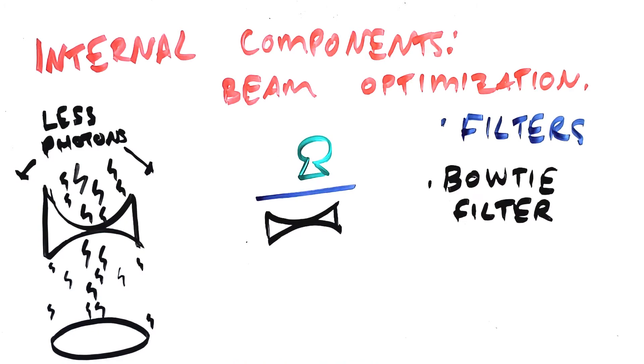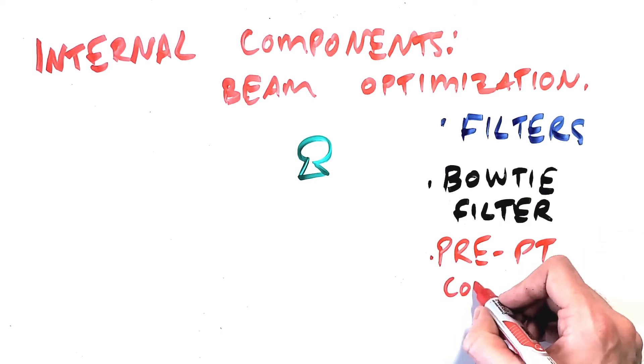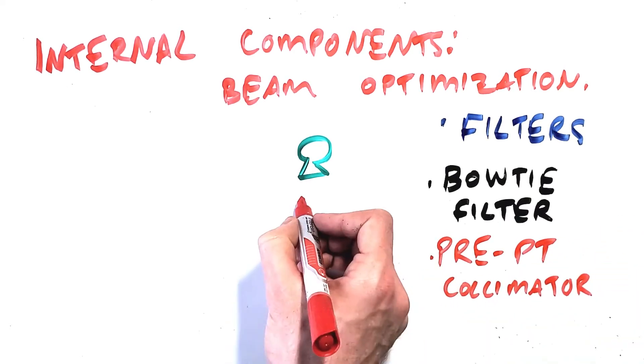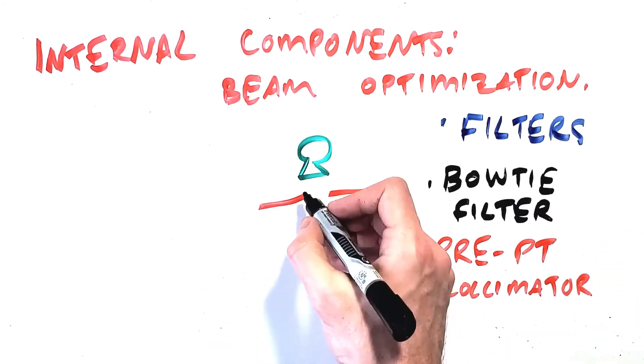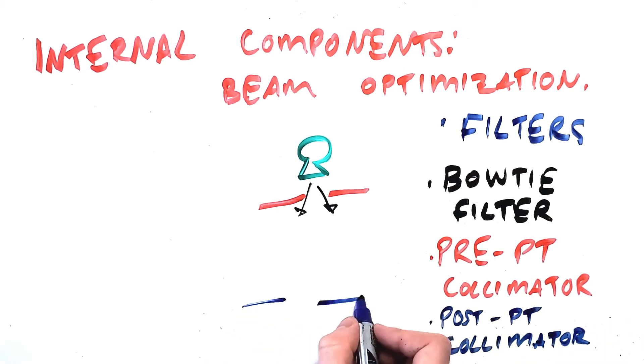As in conventional x-ray there is a collimator between the tube and the patient which shapes and defines the edges of the x-ray beam leaving the tube. And unlike conventional x-ray there's also a post-patient or pre-detector collimator which aligns to the edges of the detector area being used. Again shaping the beam before it hits the detector and absorbing scatter radiation to improve image quality.